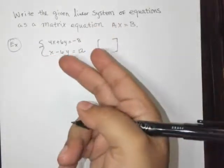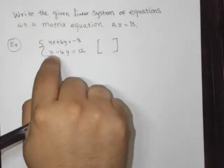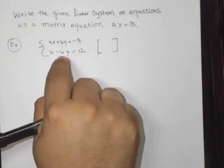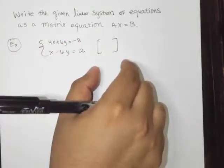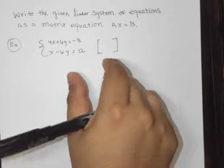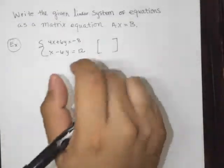So if the equation is kind of transposed, if this had said negative 6y plus x, I would rearrange it so that you can put it in the appropriate order. If you don't do that, you're going to get solving of the matrices wrong.